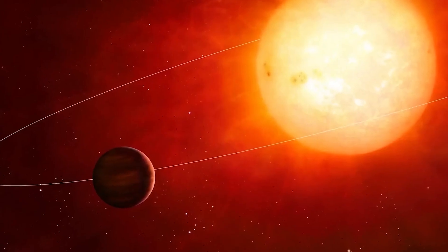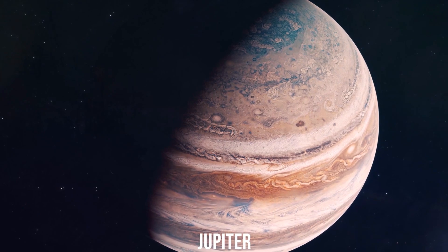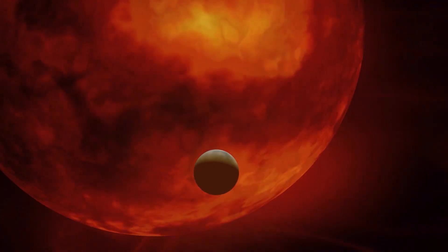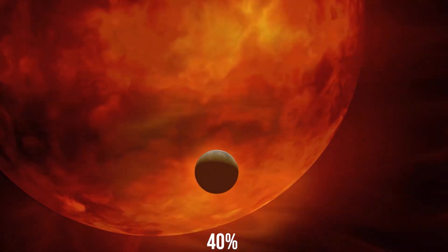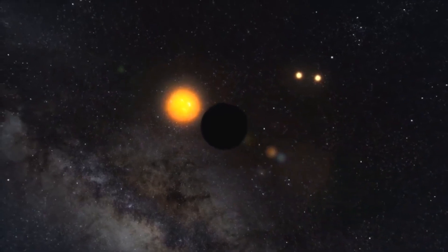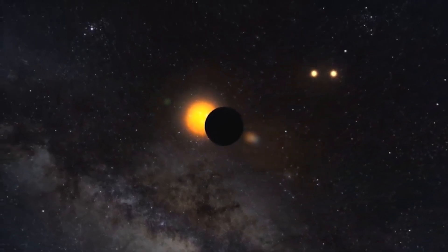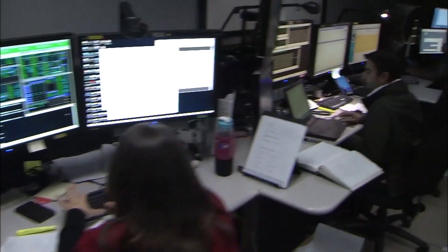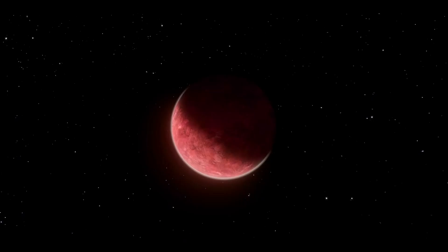TOI-5205b is about the size of Jupiter, the largest planet in our solar system, and yet it's orbiting a star that's just 40% the size and mass of our sun. How could such a small star host such a giant planet? Scientists have been left scratching their heads and rethinking everything they thought they knew about planet formation.